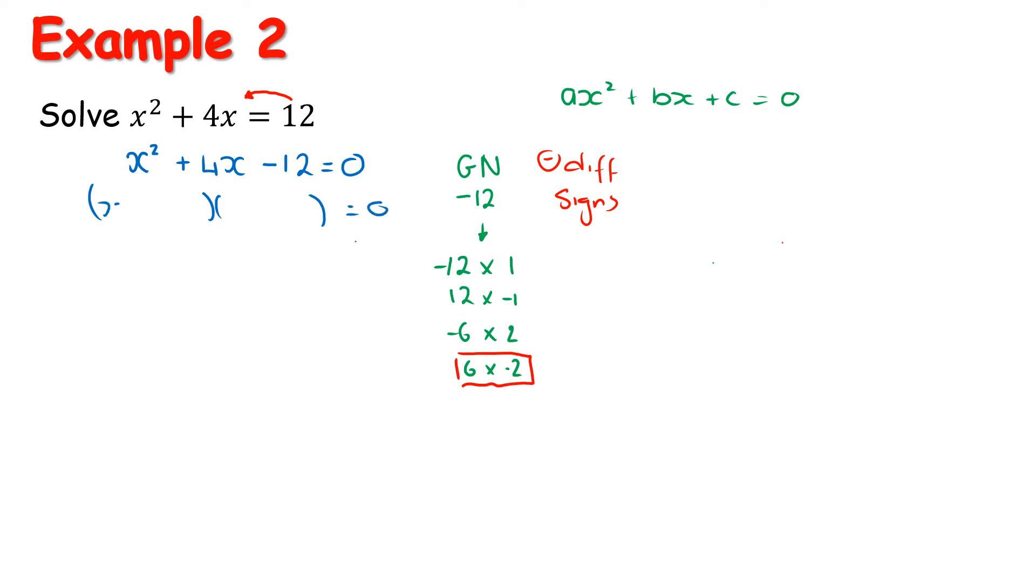So we get (x + 6)(x - 2) = 0. So now using that zero product principle, we're going to have these two answers.